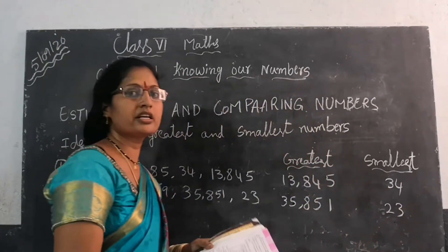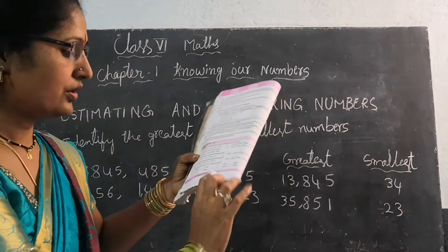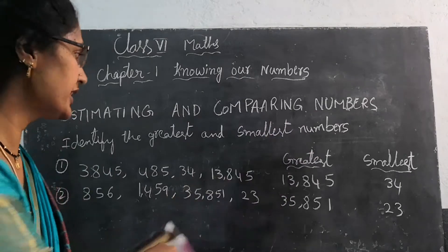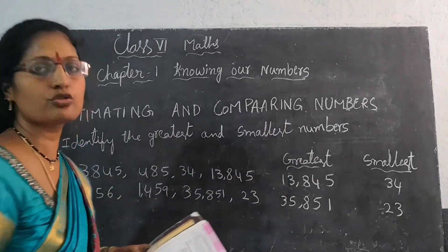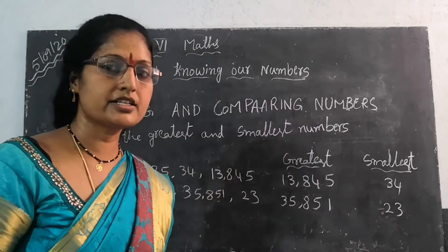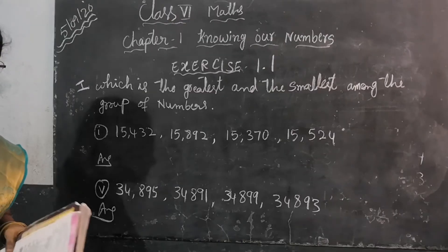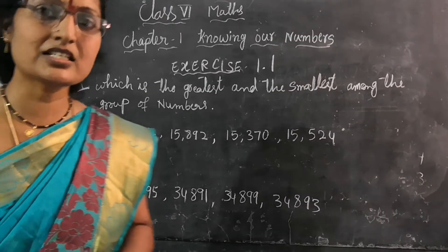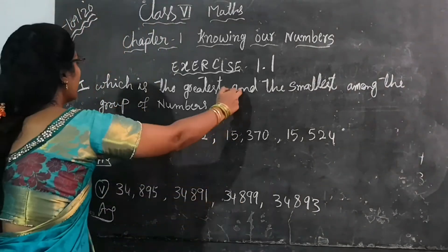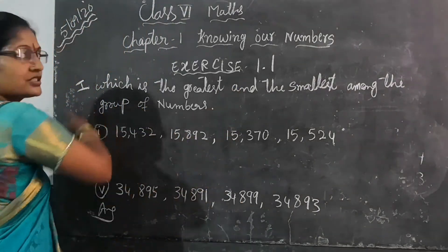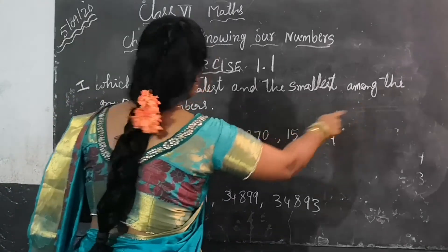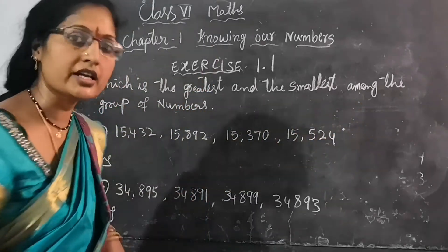Okay, children. In your textbook, we have page number 2. We have 4 examples — I will explain 2 for you; the remaining 2 you have to complete yourself. Now we start Exercise 1.1. In 1.1, the first question is: which is the greatest and smallest among the group of numbers?